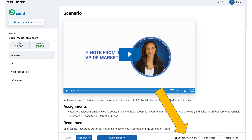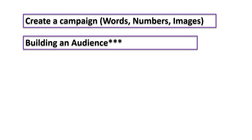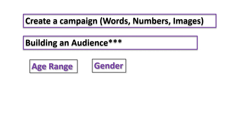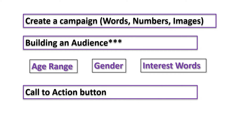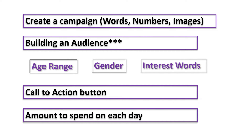Go back to the main screen and click on Scenario Overview and look for your market. Rounds 4 through 6 want you to develop an audience and this is where you'll find helpful information. I have a separate video on how to build an audience, so I'll just hit the highlights here. You are still creating a campaign with words, numbers, and images. You will develop an audience by choosing the gender, ages, and interest words. There is a drop-down box to select a call to action, and you will decide the amount of money per day to spend on each campaign.